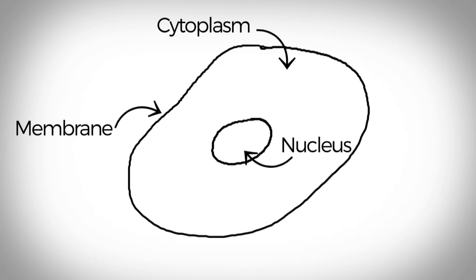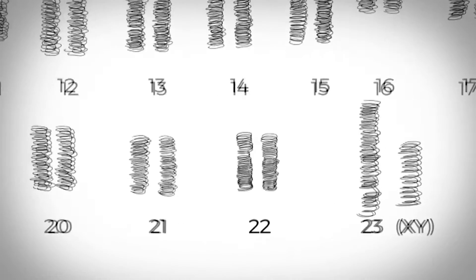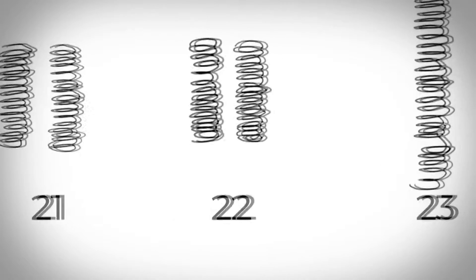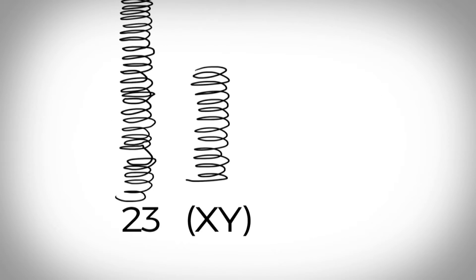The 23rd pair of chromosomes are two special chromosomes, X and Y, that determine our sex. Females have a pair of X chromosomes, 46 double X. Whereas males have one X and one Y chromosome, 46 X and Y.